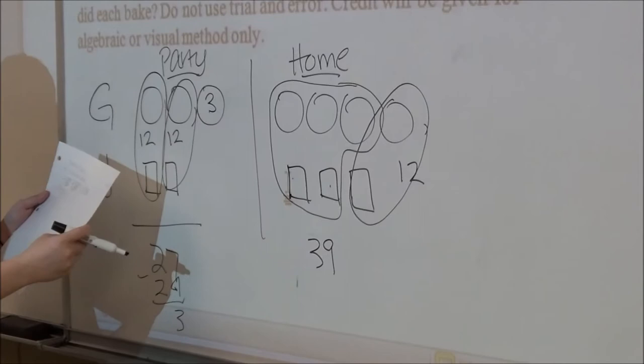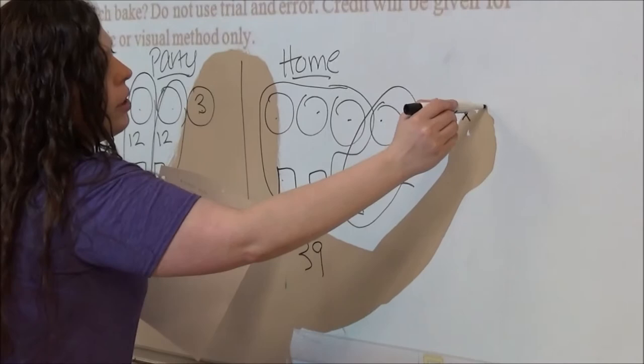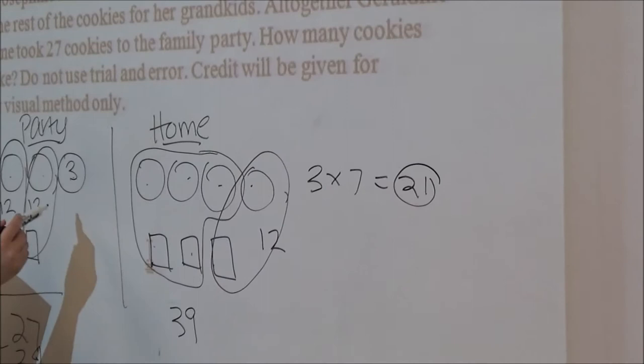12 and 12 is 24, from 27 is 3. So one circle is equal to three.